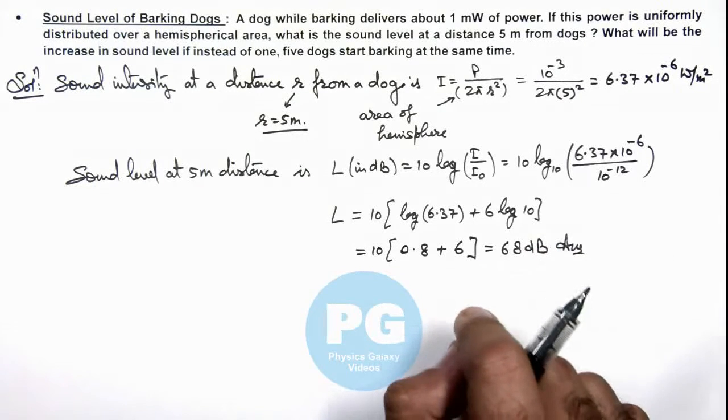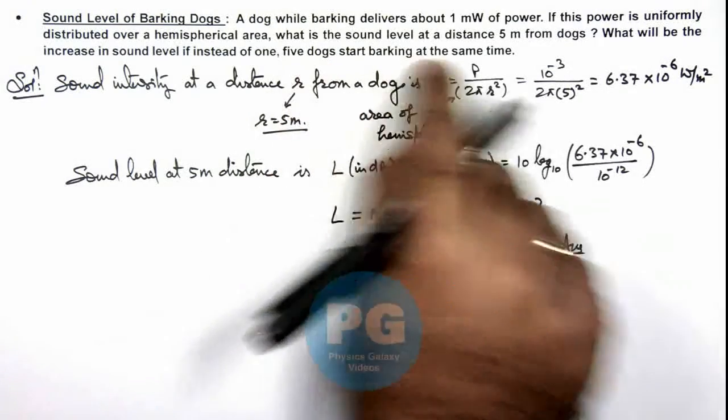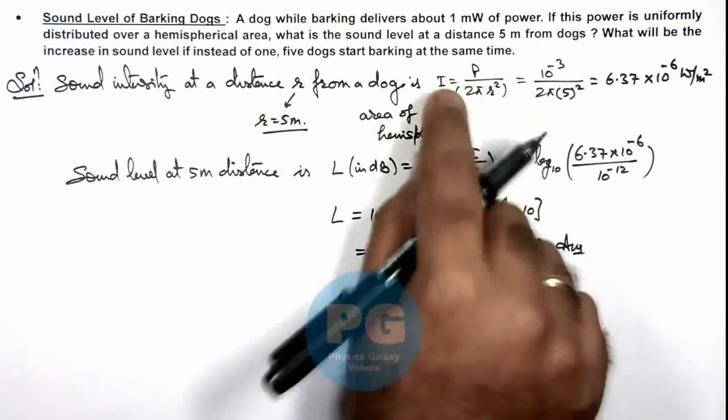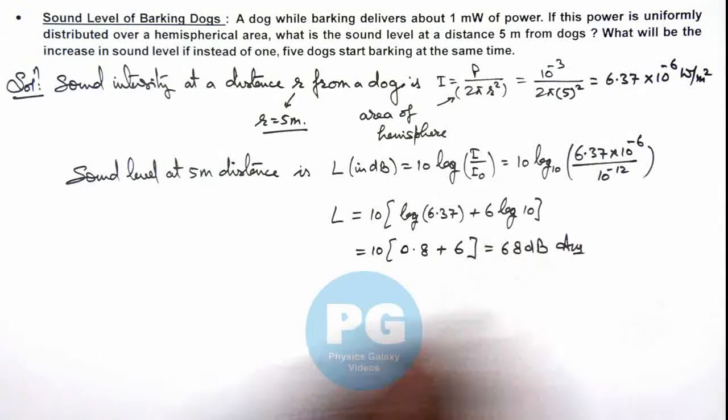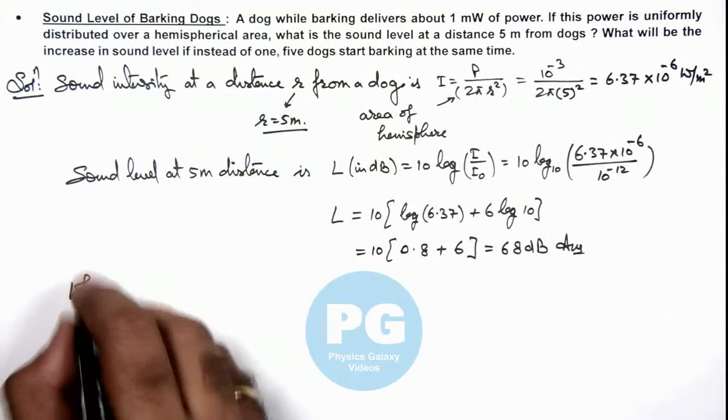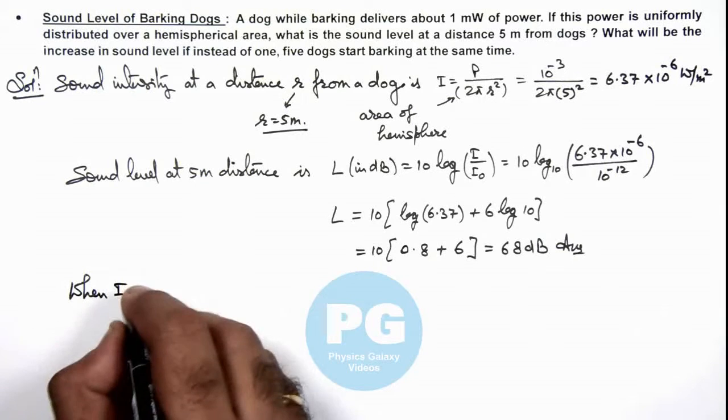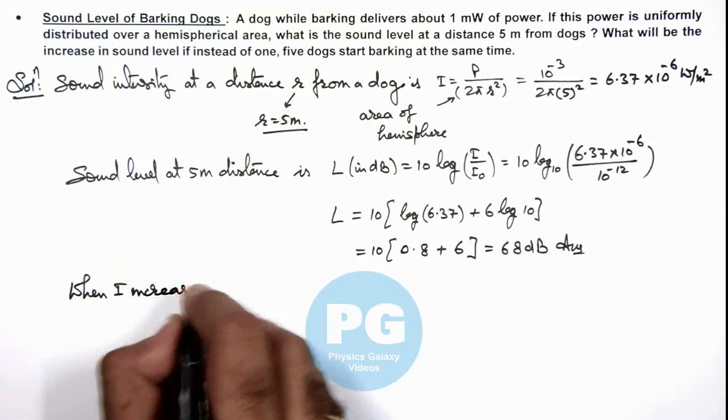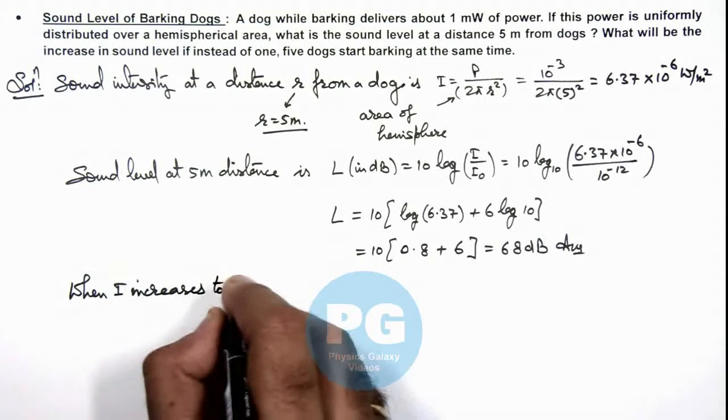And now we are required to find when 5 dogs start barking. Then we can say the intensity becomes 5 times. So we can write when i increases to 5i...